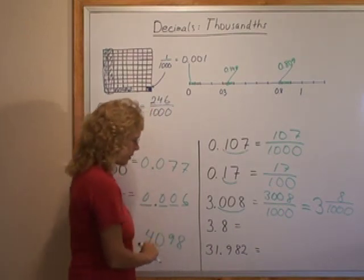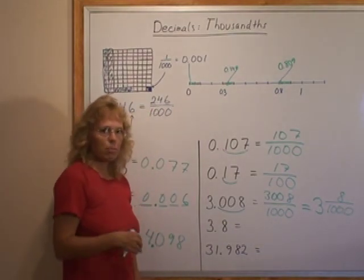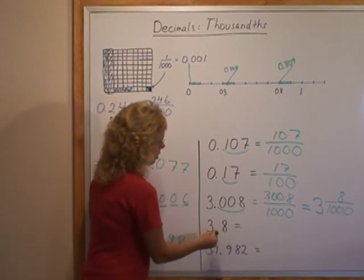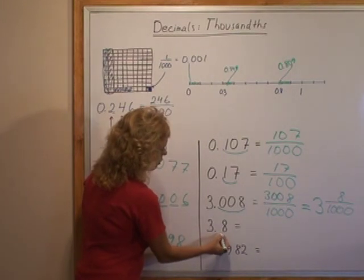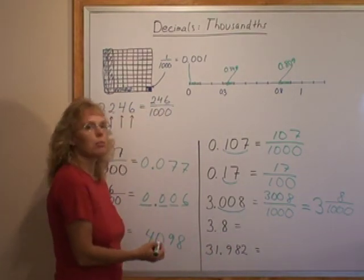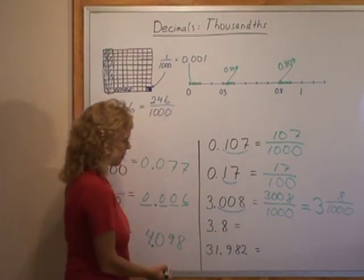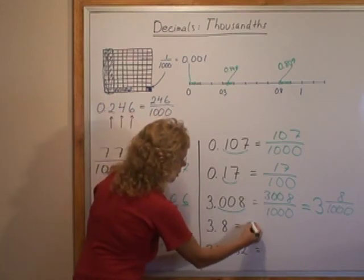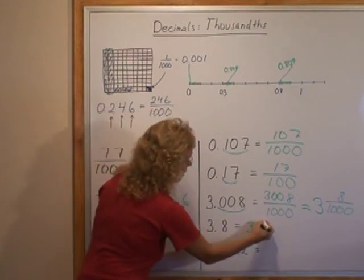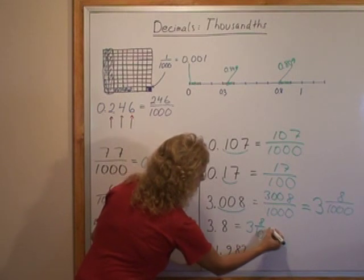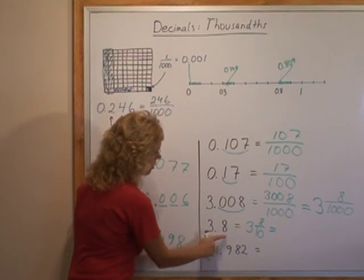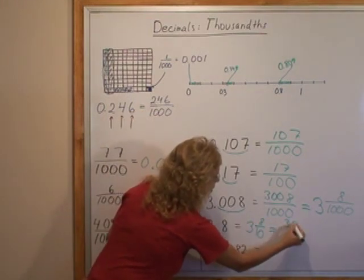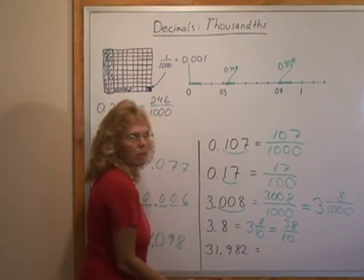Now this one here I put in here because children need practice, of course, where we have different lengths decimals. This one only has one decimal digit after the decimal point, so this is tenths. As a mixed number we have three here and then eight tenths. And as a fraction you just imagine there's no decimal point and write it 38 and ten in the denominator.